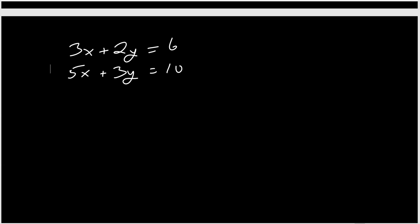So I think I'm going to eliminate the x because we did y last time. So what you do is you take the first equation and you multiply it by whatever the coefficient is for the second equation. So since the second equation has a 5 in front of the x, I'm going to multiply everything in the first equation by 5. So that's going to give me 15x plus 10y equals 30. Then I'm going to take the second equation and multiply it by whatever is in front of x in the first one. So in this case, there's a 3 in front of the x in that first equation. So I'm going to multiply everything in the second equation by 3. That's going to be 15x plus 9y equals 30.